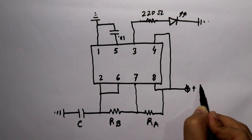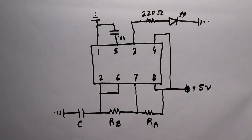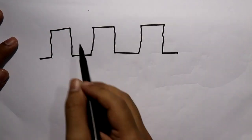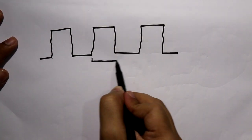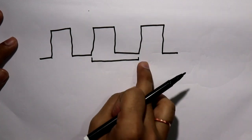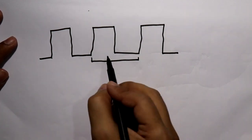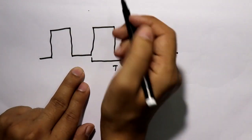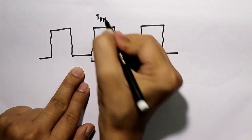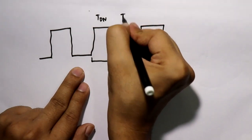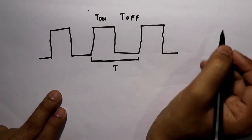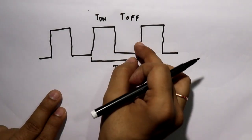Here we are going to supply plus 5 volts. Before going to the circuit diagram we need to know the output waveform and the duty cycle. The output will be like this — one cycle goes from here to here. This part we call T_on and this part we call T_off. By changing T_on and T_off we can increase or decrease the duty cycle.